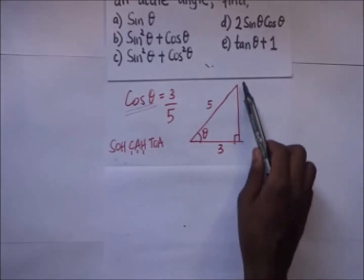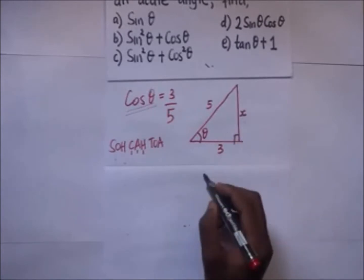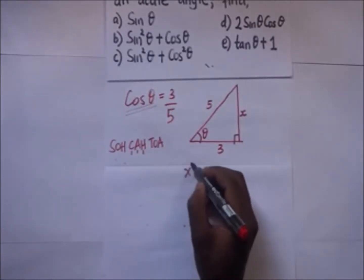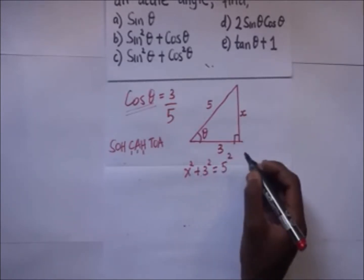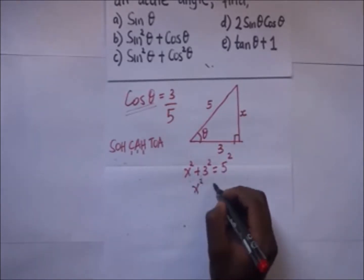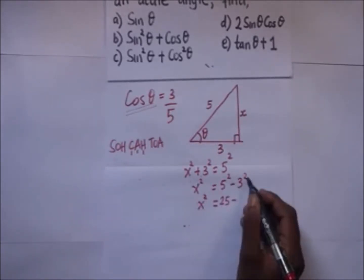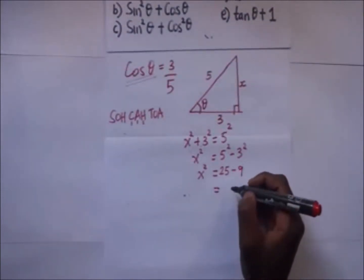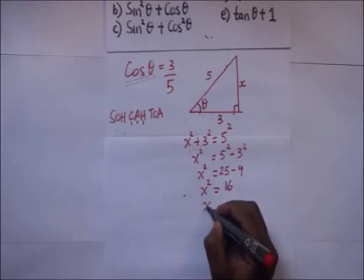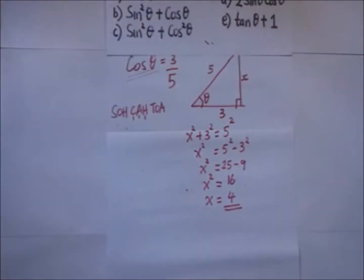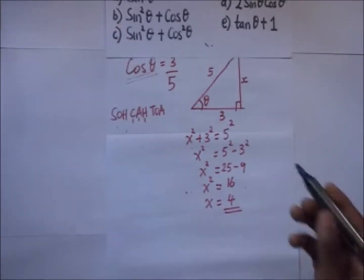Let's call the remaining side x. Using the Pythagorean theorem: x squared plus three squared equals five squared. Solving this gives us x equal to four, so our triangle is now complete with sides three, four, and five.